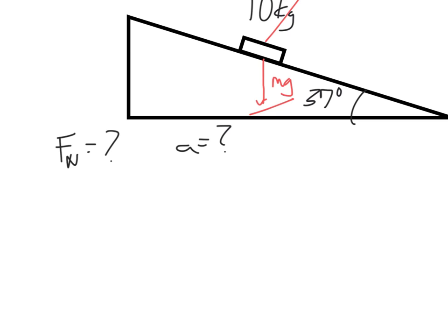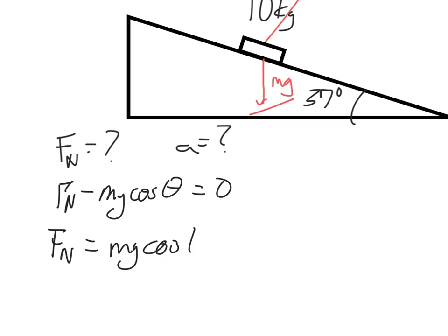So I've got those two forces. And I know that my block is not going to accelerate in that direction. The acceleration equals zero. But I do know that it's going to accelerate down the ramp. So I'm going to start with my normal force. And again, normal force minus mg cosine theta equals zero. Which means that my normal force equals mg cosine theta.